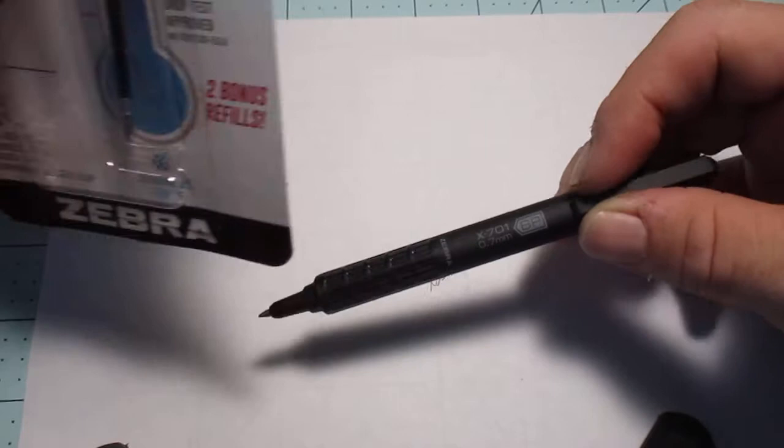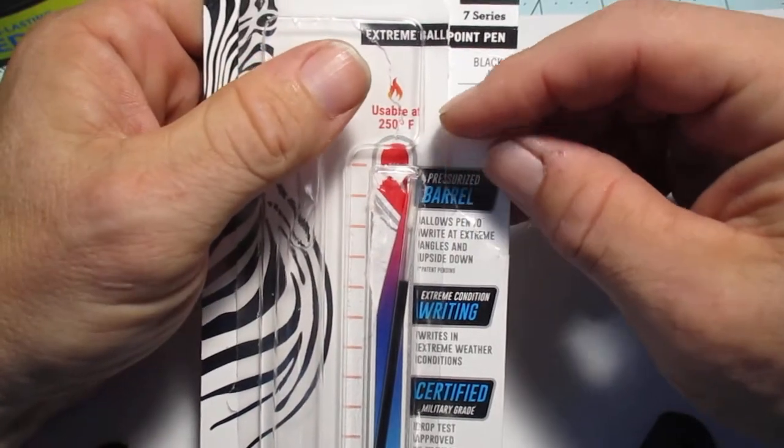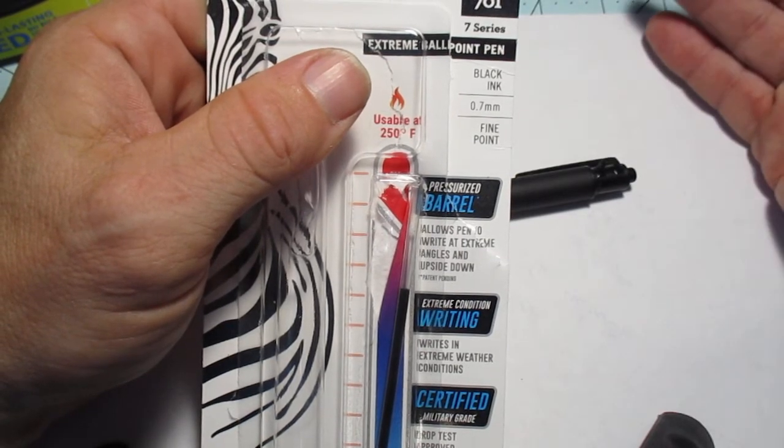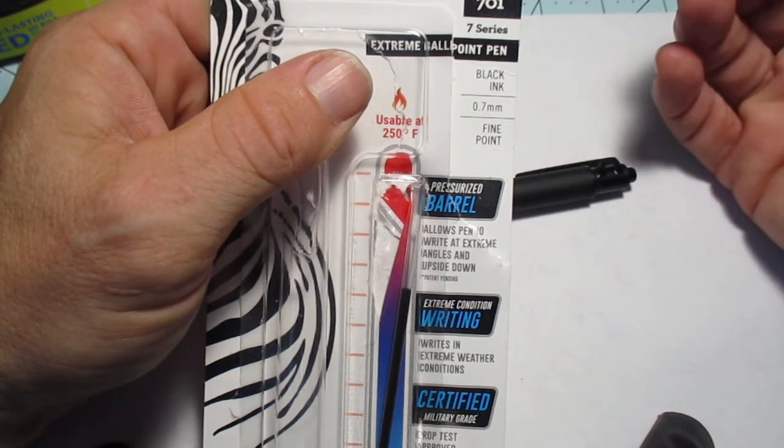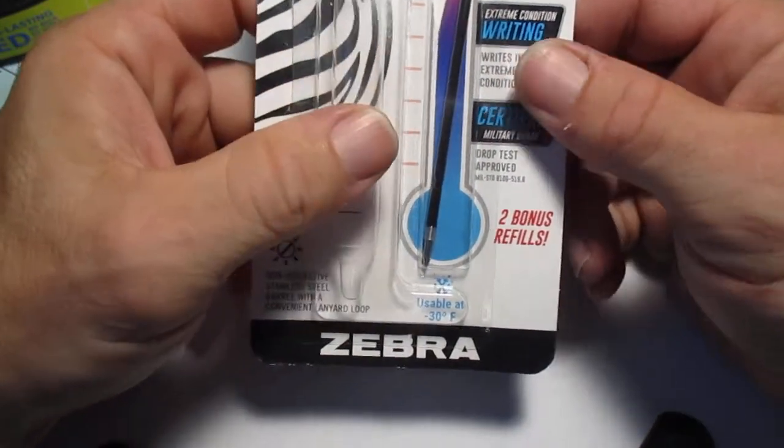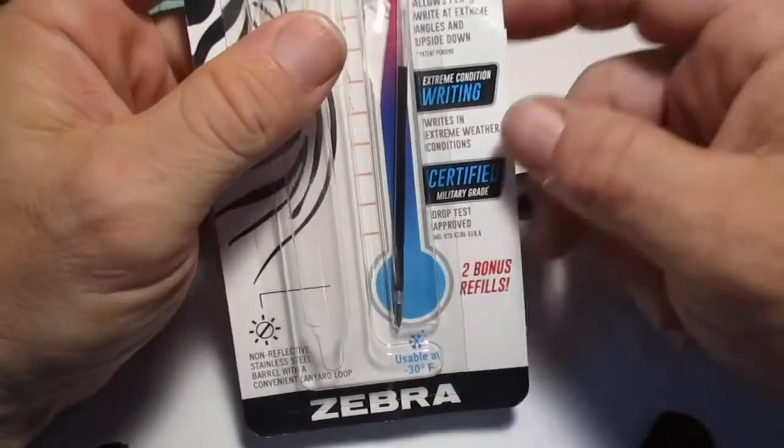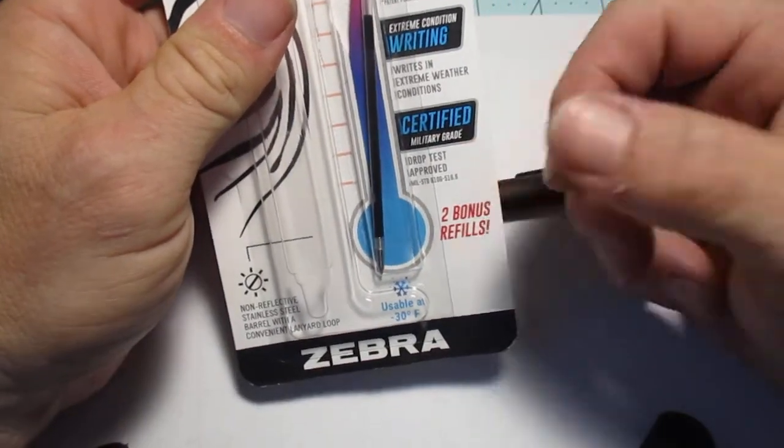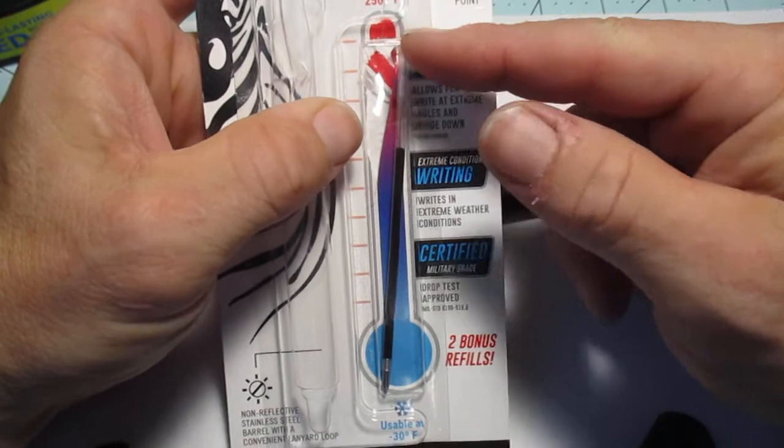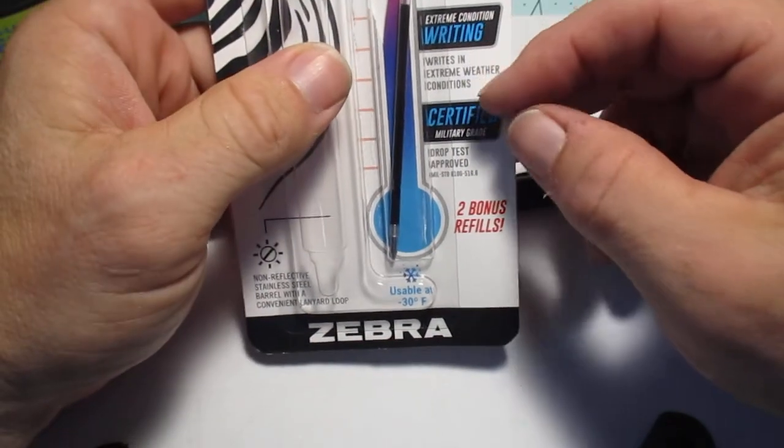All right, so just some academic stuff on this pen. It's made to be usable at 250 degrees Fahrenheit. Okay, that's good to know, but if you find yourself having to write in 250 degrees, perhaps you've made some poor life choices and you need to reconsider. Okay, usable at negative 30 degrees. Okay, that one I want to say is more practical than the 250 Fahrenheit, because there are some places in the world where it gets to that. I'm not too sure about the positive 250, but the negative 30.